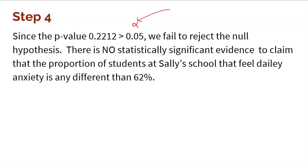That's how you make a conclusion — really just a couple of sentences, but written clearly and concisely. You must explicitly compare your p-value to your alpha, state whether you reject or fail to reject, and give a nice blurb in context. That's it for this video — I hope you found this whole process not too bad. Now we just have to put it all together and work on some problems.